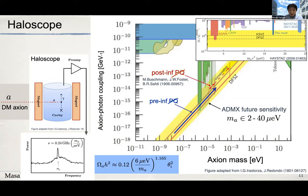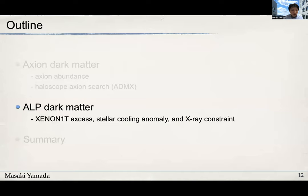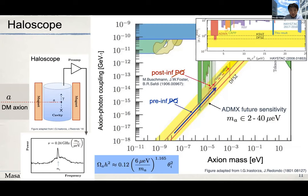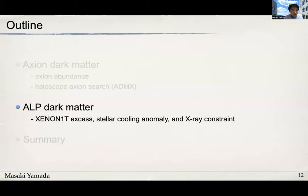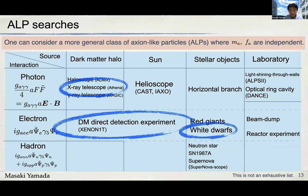In the QCD axion case, we are interested only in a specific region because the axion mass is related to the axion decay constant. But one can think about a more general class of axion-like particles, or ALPs, in which case the axion mass and its decay constant are free parameters and independent of each other. So all other parameter regions are also interesting. Let me move on to ALP dark matter scenarios. I will focus on three experiments important to understand the XENON1T excess recently reported.